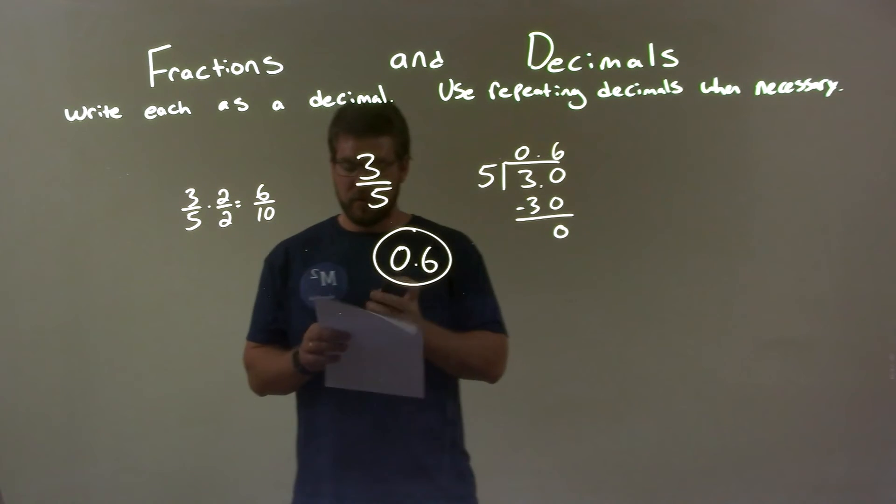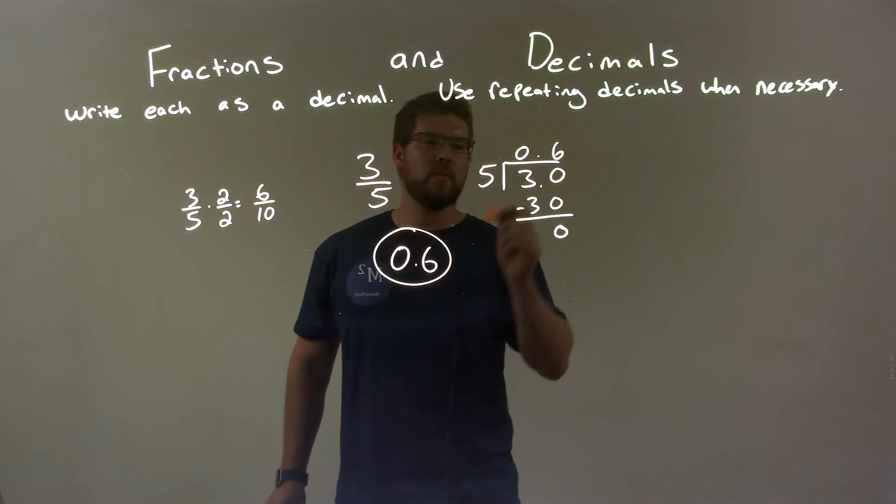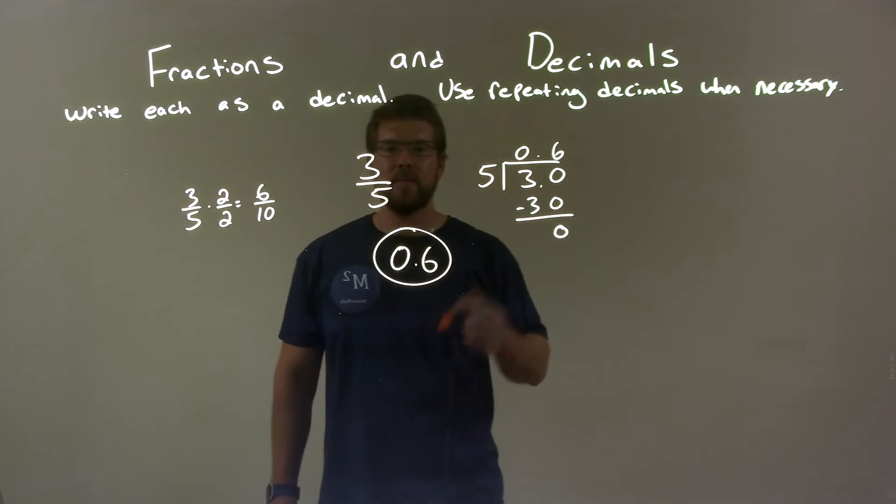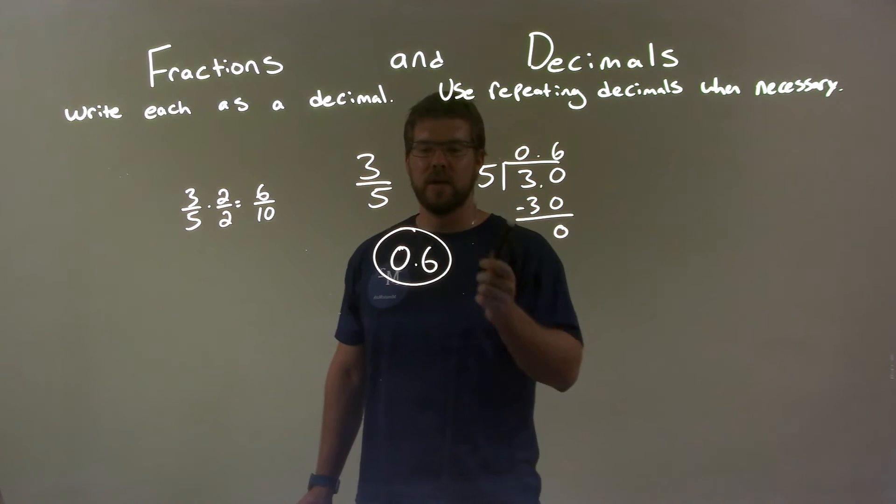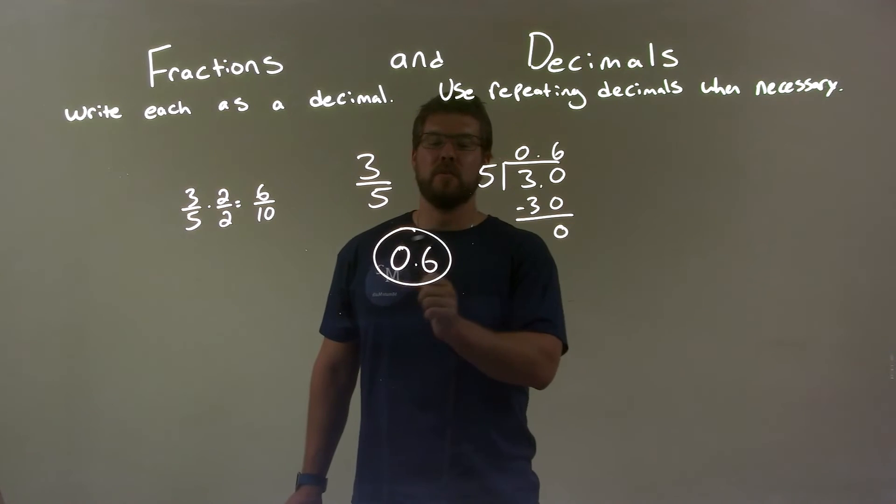Quick recap. The way we did it normally, we had three-fifths. We used long division, five into three, which gave us 0.6. So again, our final answer is 0.6.